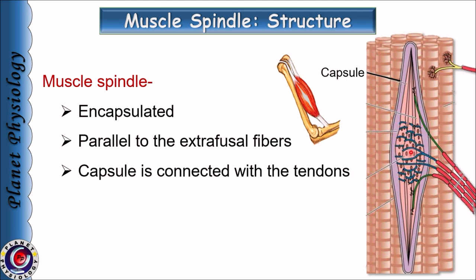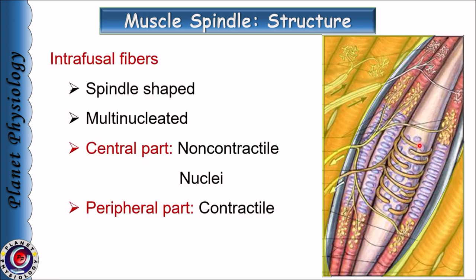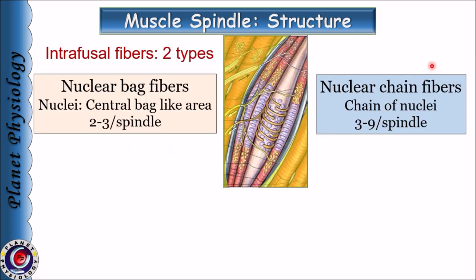Muscle spindle is an encapsulated, multinucleated, spindle-shaped or fusiform structure. They are placed parallel to the extrafusal fibers and their capsule is connected with the tendons on either side. Nuclei are concentrated in the central non-contractile region of the muscle spindle, whereas the peripheral portion is contractile in nature. The muscle spindle is made up of two types of intrafusal fibers.